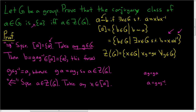So because X is in the conjugacy class of A, this means there exists a g in G such that X is equal to g A g inverse.